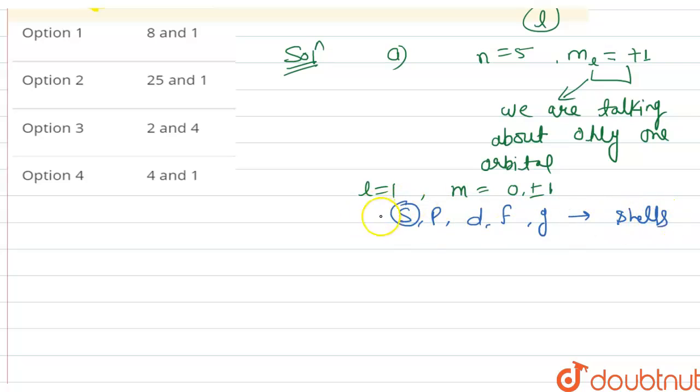s cannot be possible here. For p, d, f and g, we have to select one orbital from each shell. One orbital, one orbital, one orbital, and one orbital. One orbital has two electrons maximum.